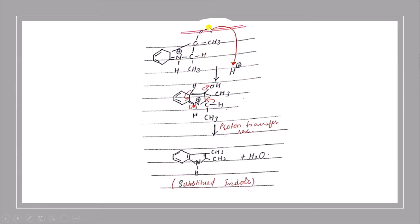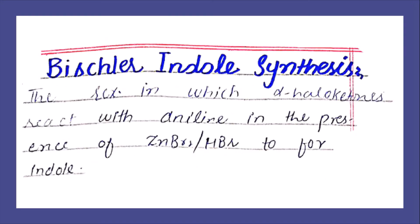In the next step, there is a proton transfer: the O negative picks up a proton to become OH. The hydrogen at that position transfers its proton into the ring, making the ring neutral. The OH and H are then removed as water. As a result, we obtain a substituted indole — specifically a dimethyl indole. This completes the Bischler Indole Synthesis.